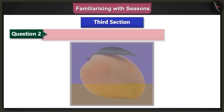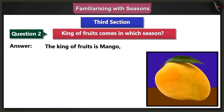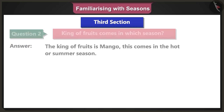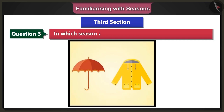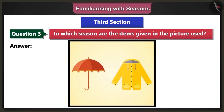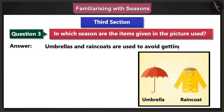Second question: The king of fruits comes in which season? Answer: The king of fruits is mango. This comes in the hot or summer season. Third question: In which season are the items given in the picture used? Answer: Umbrellas and raincoats are used to avoid getting wet during the monsoon season.